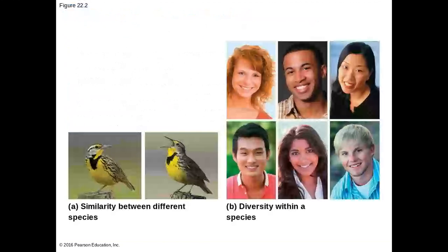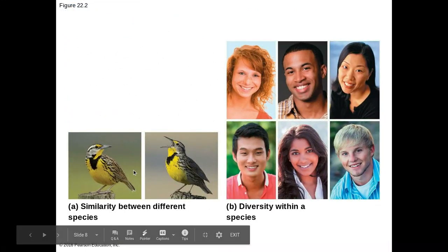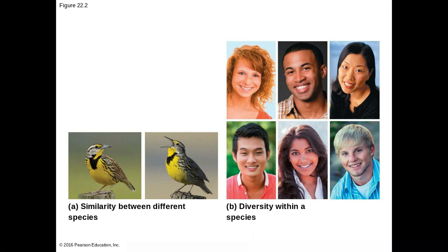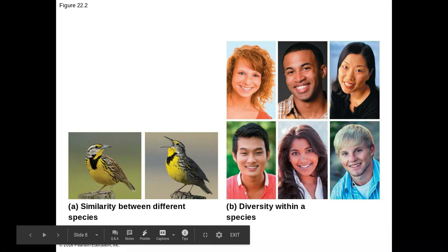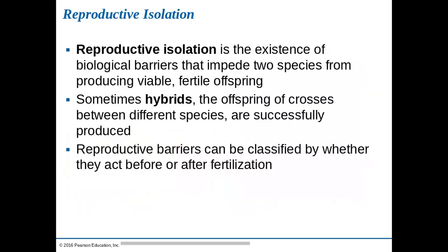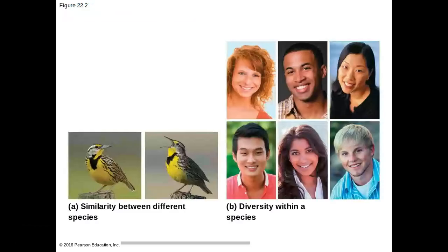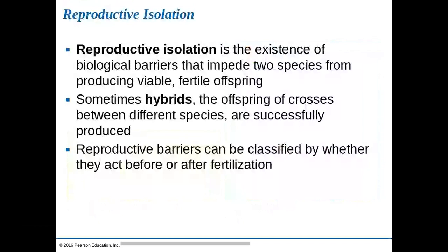It might be tempting to look at different organisms and say these guys look similar, so they must be the same species. But many organisms have a lot of diversity within a species, so just because they look similar on the outside doesn't mean they're the same species. The speciation concept brings it down to reproductive isolation — biological barriers that prevent two species from having viable fertile offspring. Sometimes we can get hybrids, a combo of different species, but generally those hybrids are not able to reproduce further.